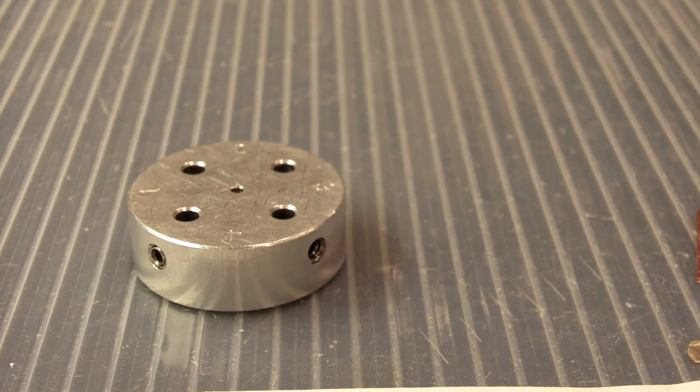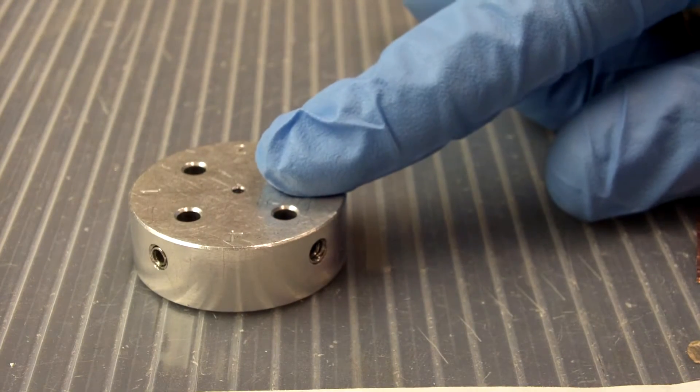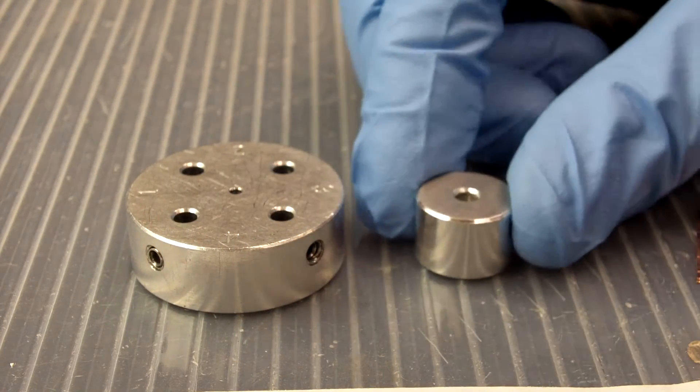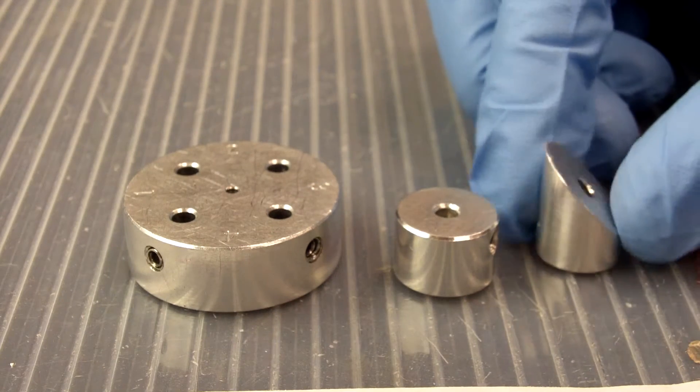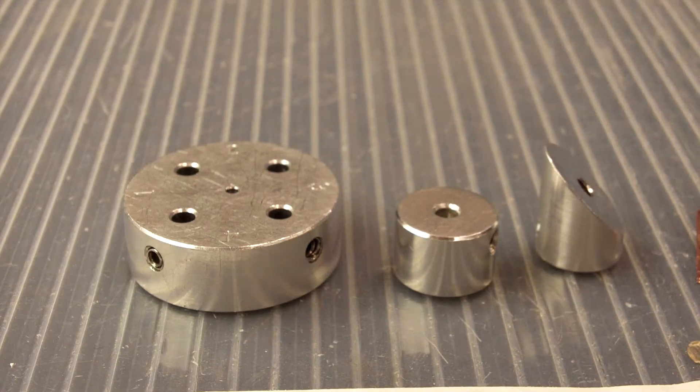And we have a few different kinds of these. This big one holds four samples, of course. And then we have this small one that will hold a single pin stub. And then we have this one here that's tilted at 45 degrees if we wanted to tilt our sample inside the microscope.